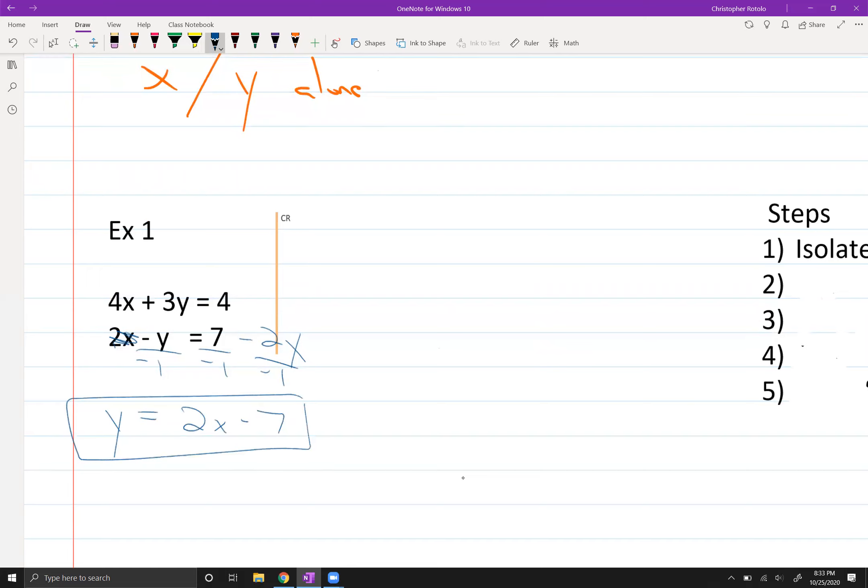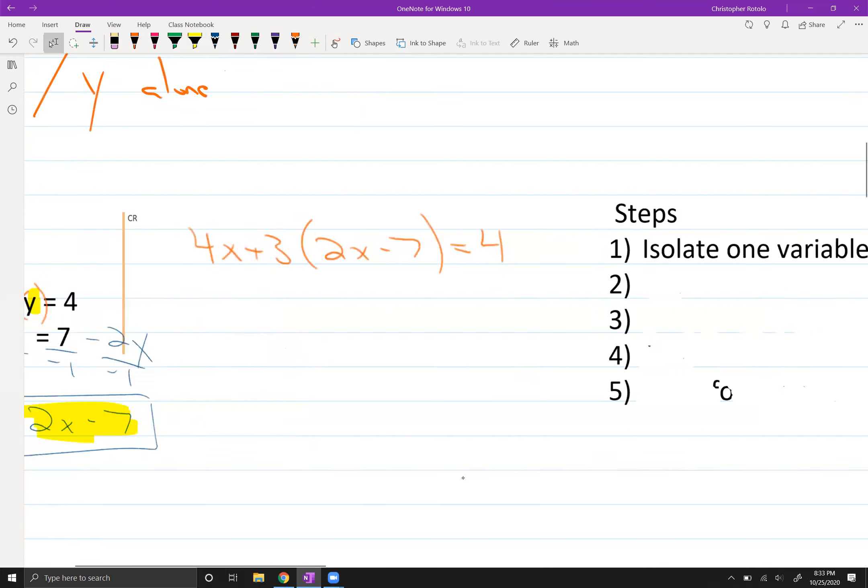I isolated one variable for one equation. And now what I'm going to do is I'm going to substitute that in. So I now know that Y is equal to this. So where I have Y in the other equation, I'm going to squeeze this equation right in here to see what happens. So now I get 4X plus 3 in place of Y. I now know Y is equal to 2X minus 7, and it equals 4. So that's going to be our second step over here as we scroll over. I'm going to isolate one variable, and then we're going to substitute.